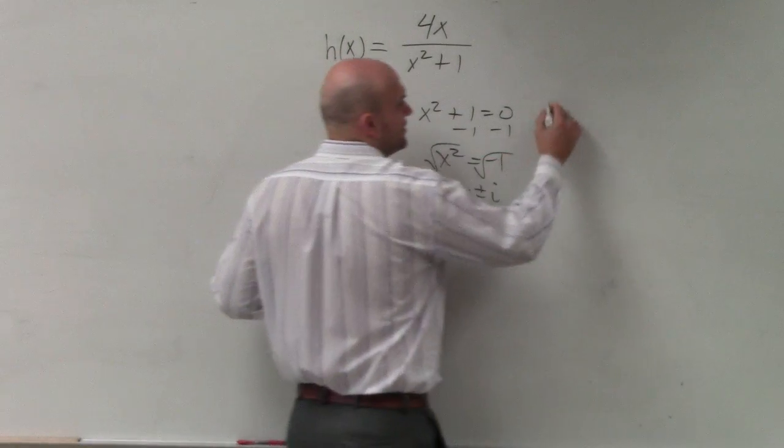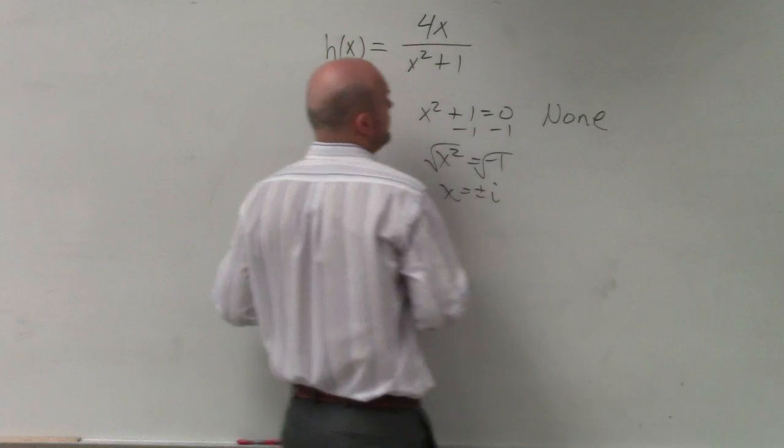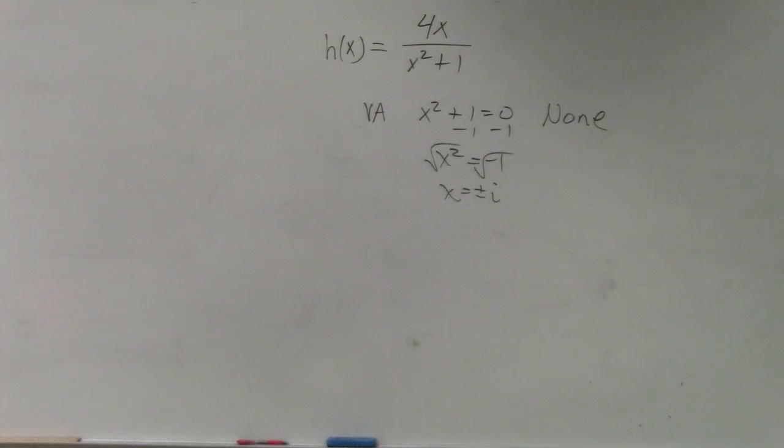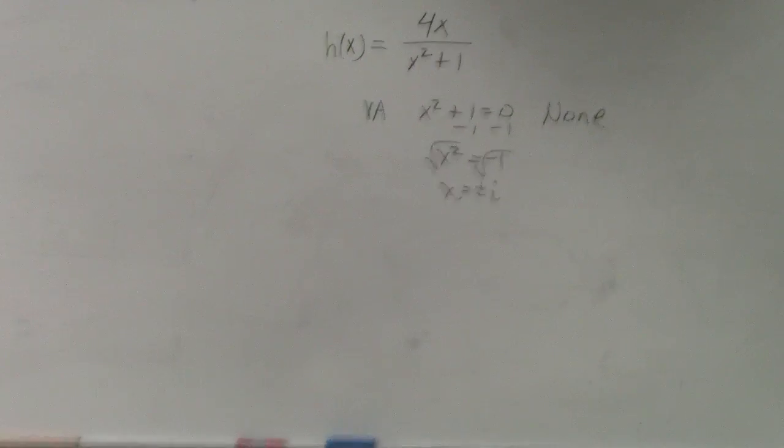So therefore, there is no vertical asymptote under our real numbers. No vertical asymptote exists.